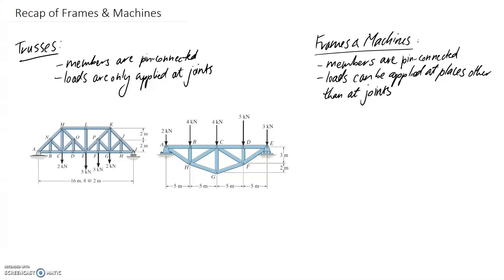So for truss analysis there's two assumptions that we need to make. One of them is that members are connected by pin joints, which means that those members are able to rotate freely at the pins. And secondly, we're making the assumption that loads are only applied at the joints.